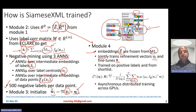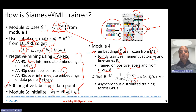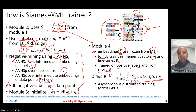Module 4 trains on positive labels and negative labels coming from the shortlist, obtained from the three approximate nearest neighbor search indexes. It uses the same negative log likelihood formulation, except it uses just one label representation — the classifier being trained. This is computationally expensive, so they also propose asynchronous distributed training across GPUs, ensuring that communication between GPUs is kept to a minimum.